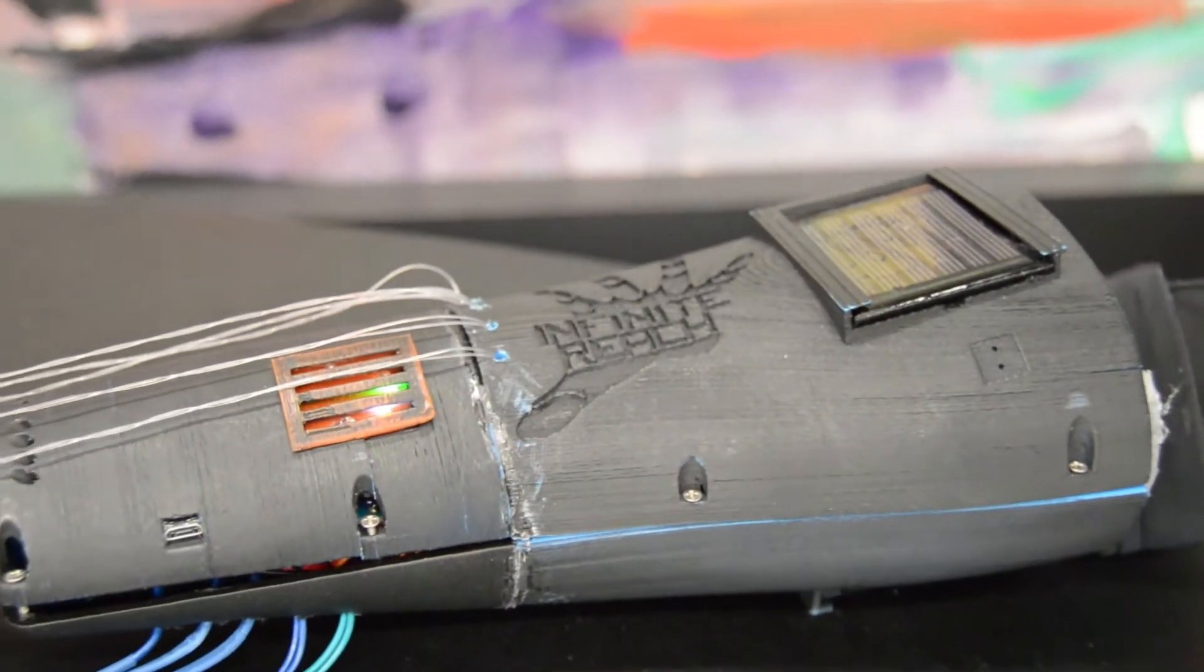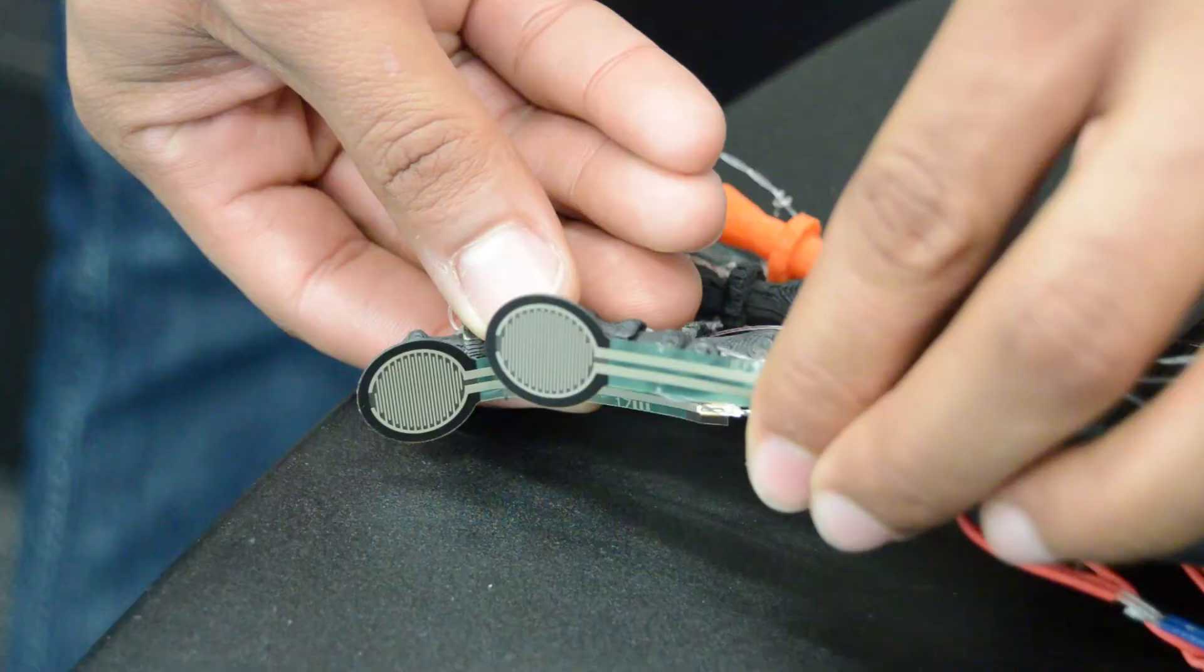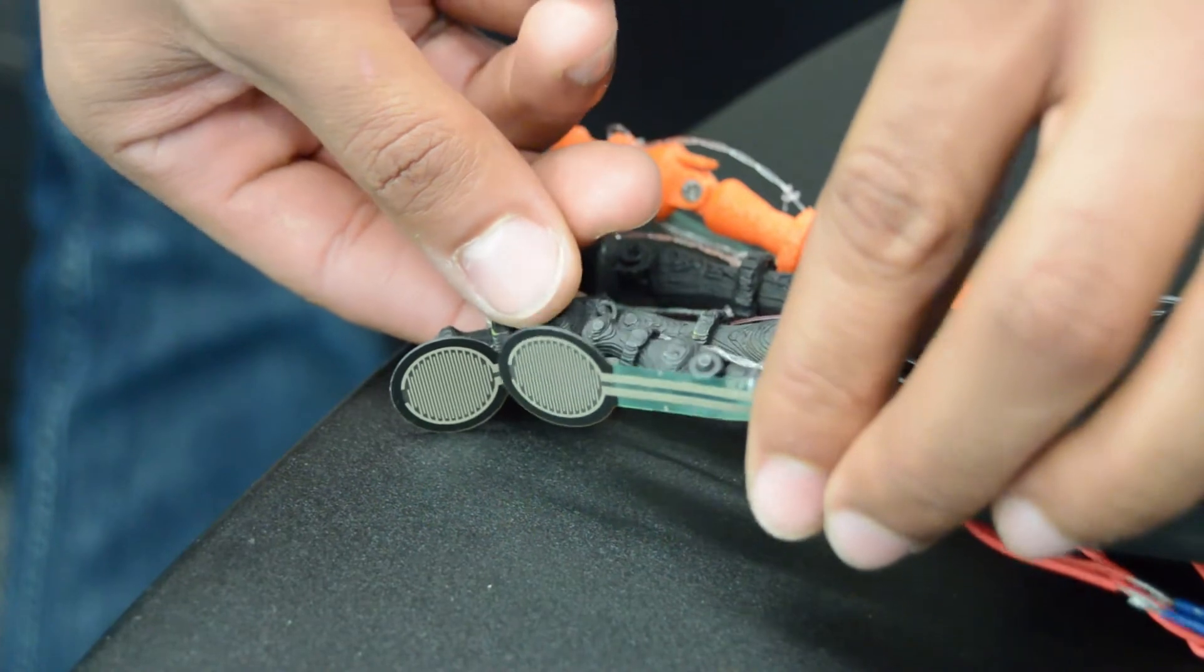Currently we're driving through servo motors as well as using force sensitive resistors on the fingertips of the arm for haptic feedback. Haptic feedback is essentially a sense of touch for the user when they use the arm.